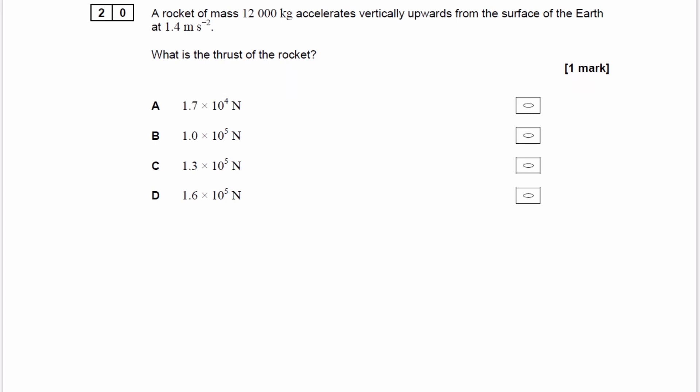A common mistake in this question is just to use F equals ma with this mass and with this acceleration. The reason that wouldn't work is because what you work out by doing F equals ma with those two values is the resultant force on the rocket, and the resultant force on the rocket is not the same thing as the thrust.